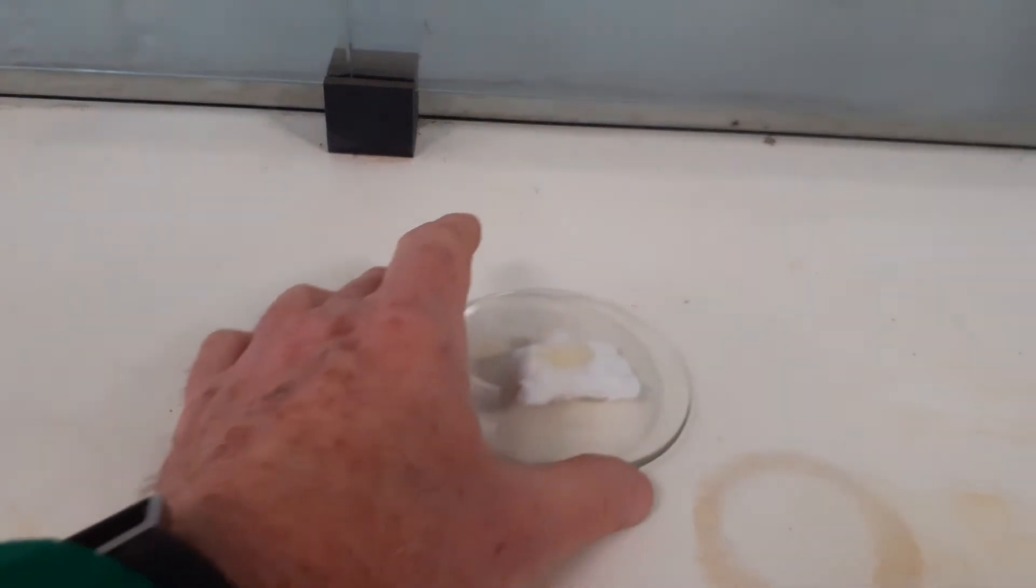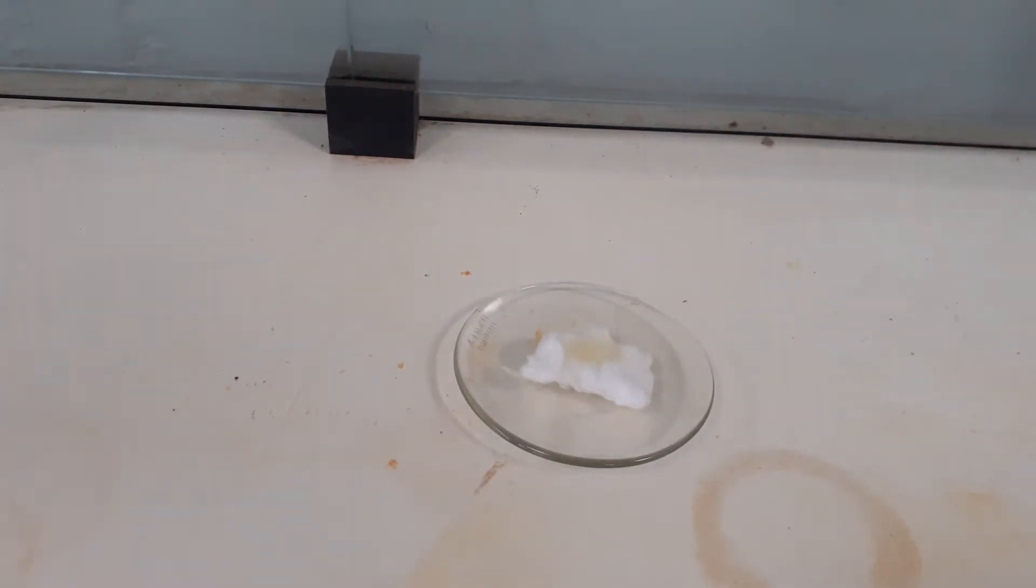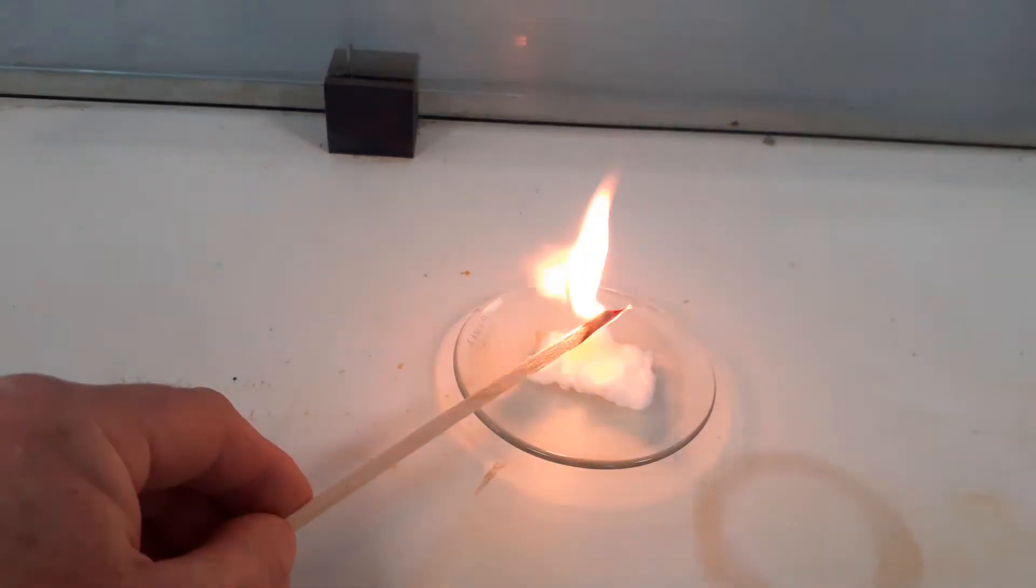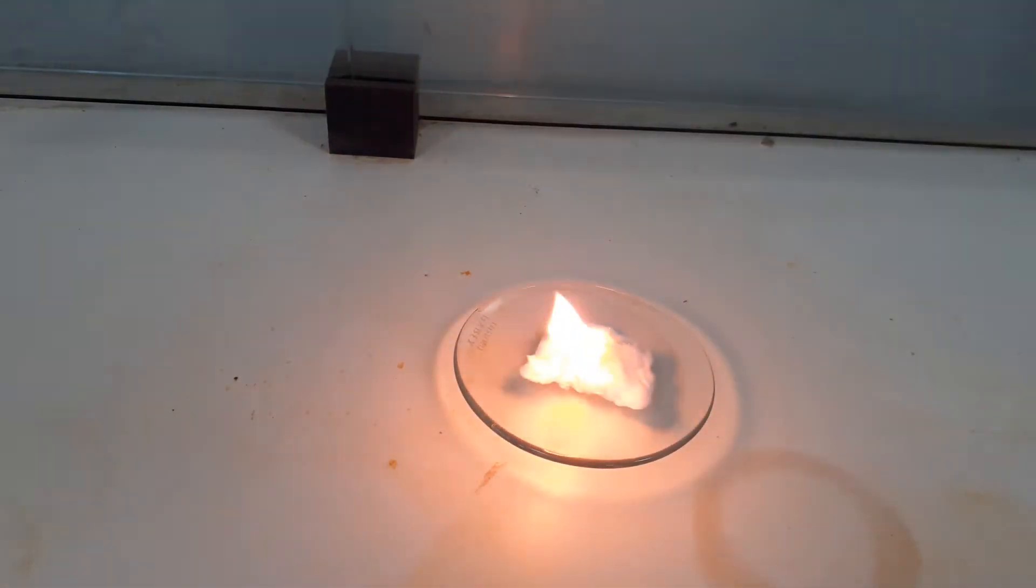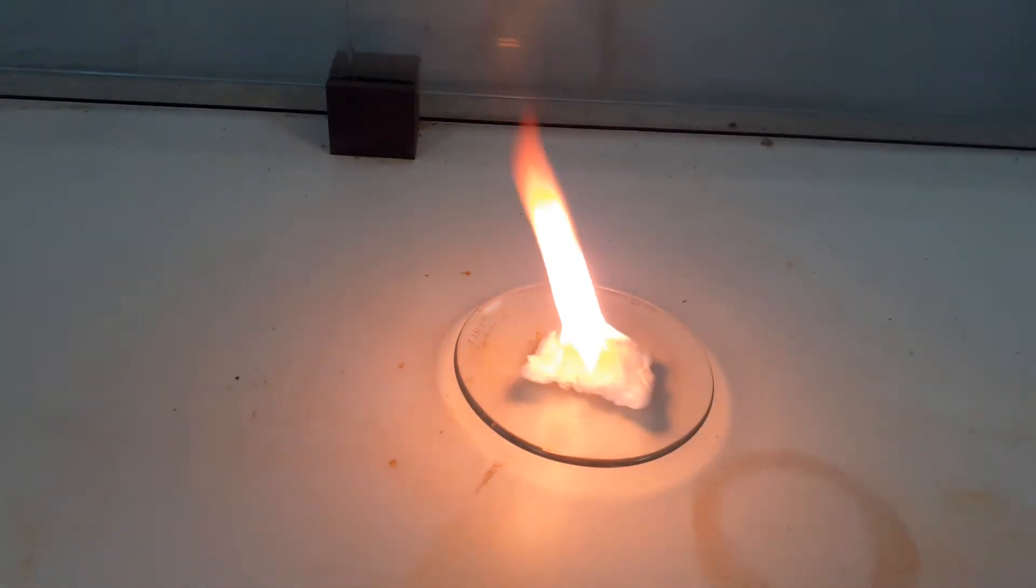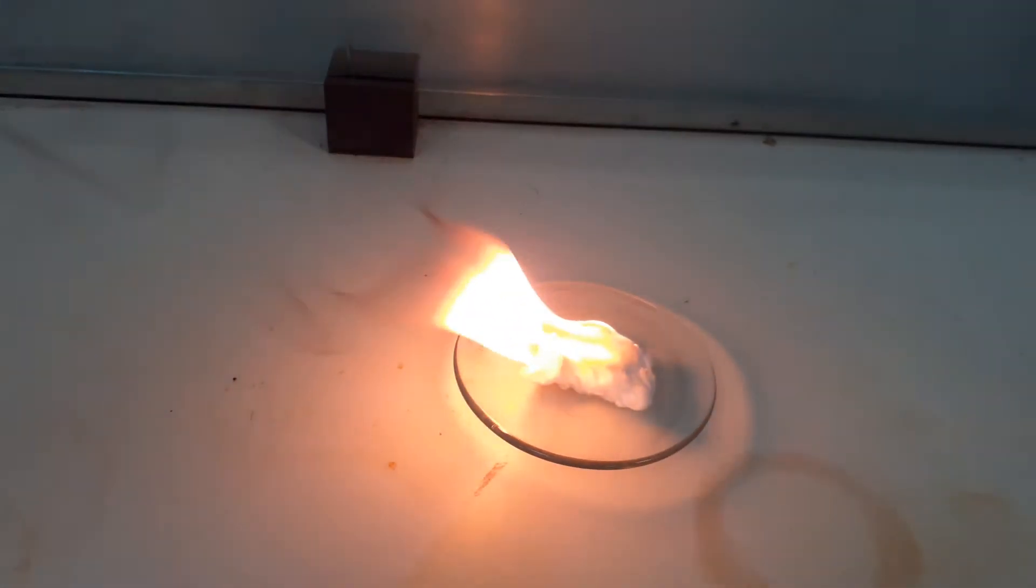Now there's a small amount of petrol on the mineral wool. I'm going to ignite that now and let's look at the flame and how it burns. As we can see it's a relatively non-smoky flame and it's quite yellow. So that's petrol as it burns.